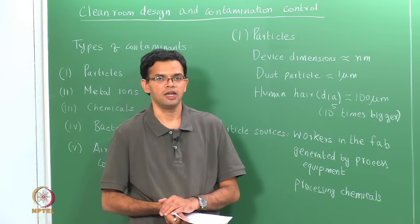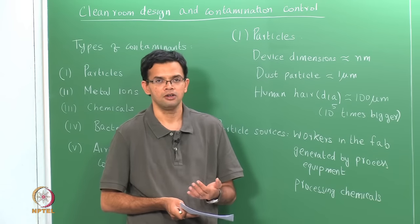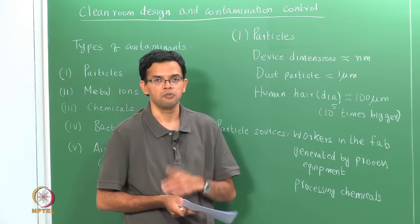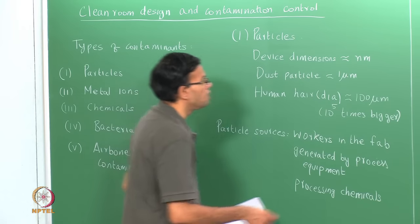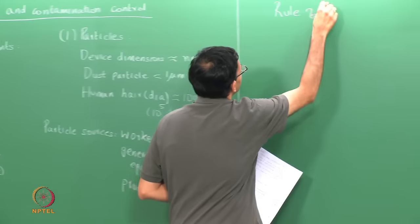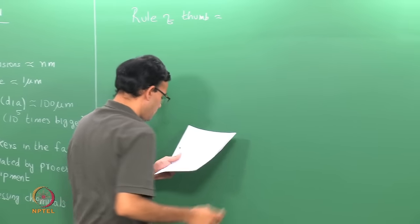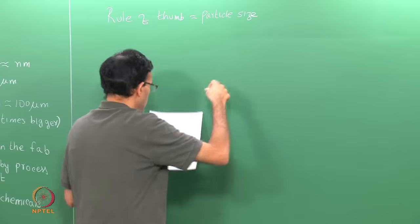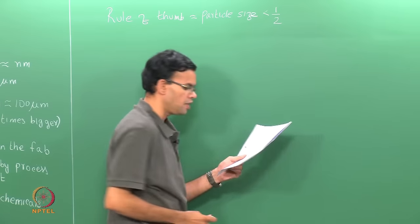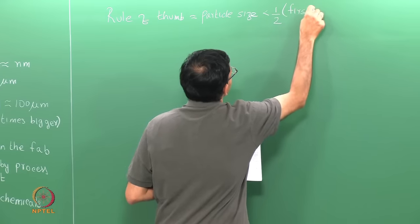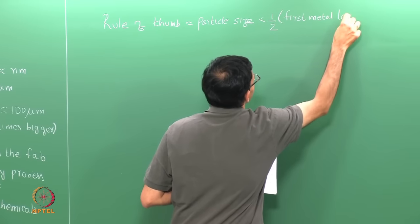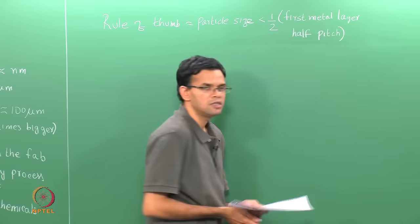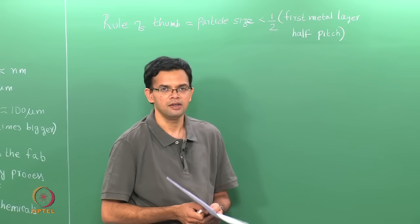Generally in semiconductors, since device dimensions are of the order of nanometers, particle levels or particle sizes should also be smaller or of the order of nanometers. A rule of thumb states that the acceptable particle size must be less than half the first metal layer half pitch. This gives you the minimum size of particles that have to be detected and controlled.